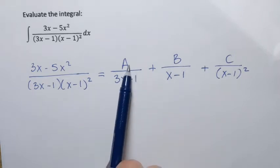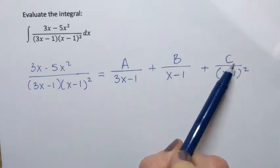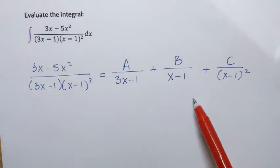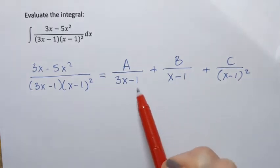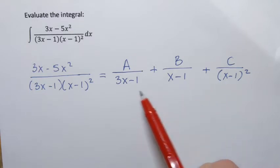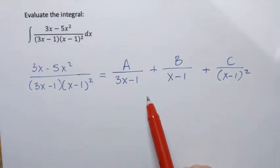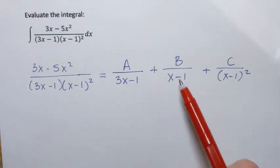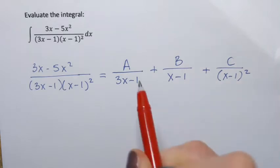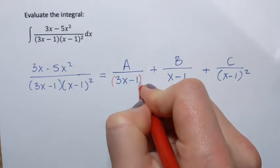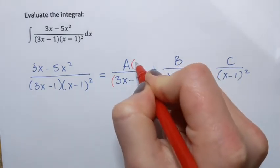Our goal is to find A, B, and C. To do that, I'm going to combine those fractions together. To combine them they need the same denominator, so what's the least common denominator? The original denominator will be the LCD. I need to multiply each fraction by what it's missing. The first fraction is missing the (x minus 1) squared part, so I multiply top and bottom by (x minus 1) squared.